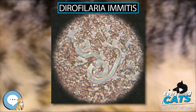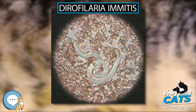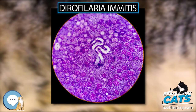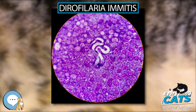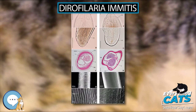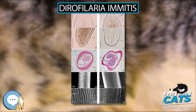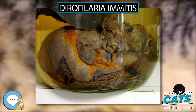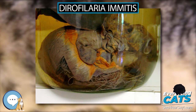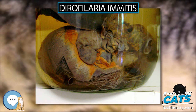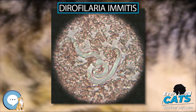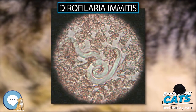Reservoir hosts for Dirofilaria immitis are coyotes and stray dogs. Dogs show no indication of heartworm infection during the six-month prepatent period prior to the worm's maturation, and current diagnostic tests for the presence of microfilariae or antigens cannot detect prepatent infections.